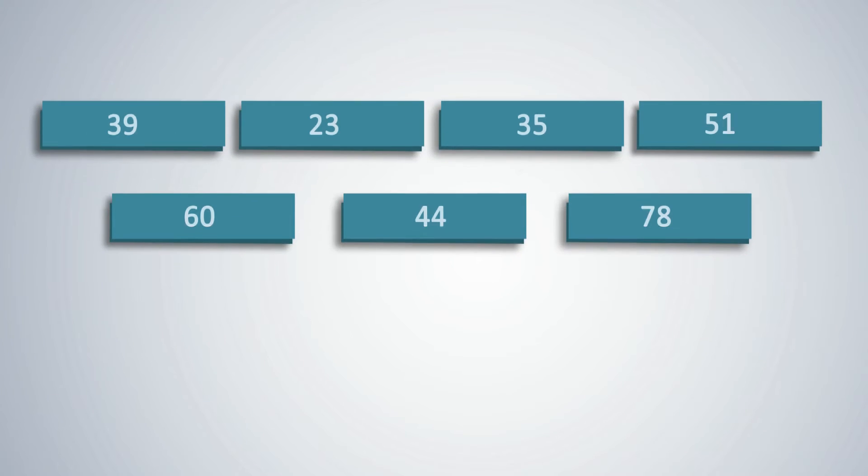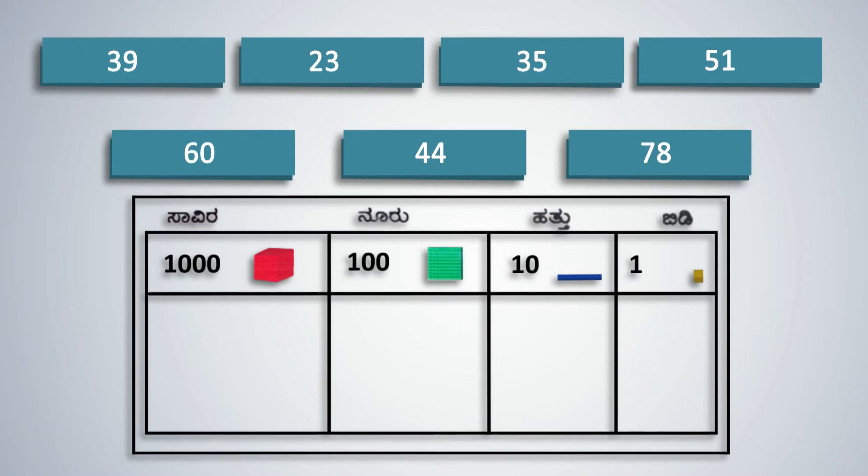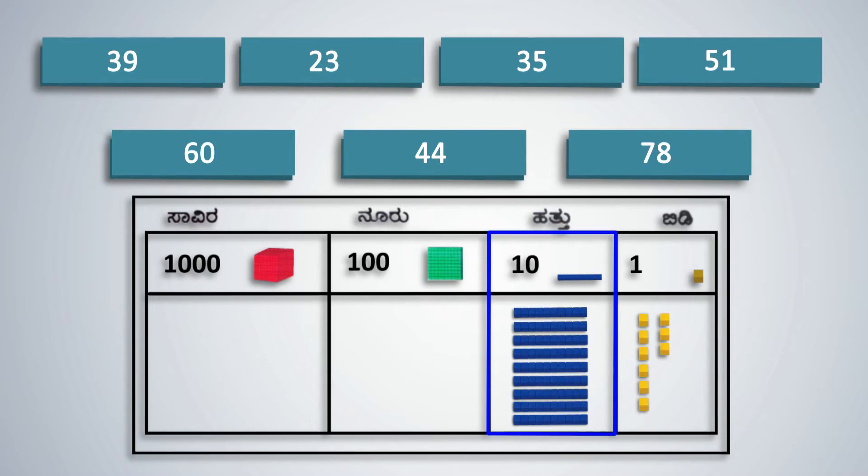Write some numbers on the board and give cubes and rods to students. Ask them to group by 10s and place cubes in the 1s place and rods in the 10s place on the place value mat. 23, for example, is 2 tens and 3 ones. Remind them that the column on the extreme right is the place for 1s. Here, a maximum of 9 ones can be placed. The column to its left is the place for 10s. Here, a maximum of 9 tens can be placed.